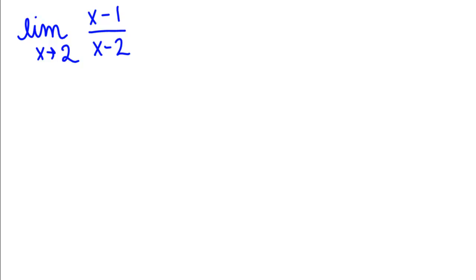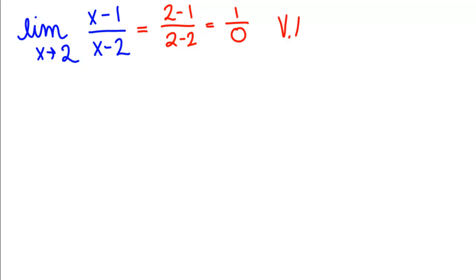The first thing we try to do is plug in and see if we can figure out what the form of the answer is. So we do 2 minus 1 divided by 2 minus 2, which gives us 1 over 0. That's a non-zero number divided by zero, which tells us we're dealing with a vertical asymptote.